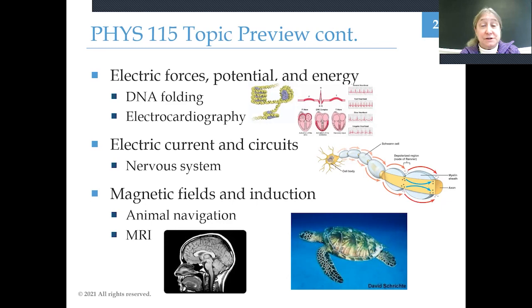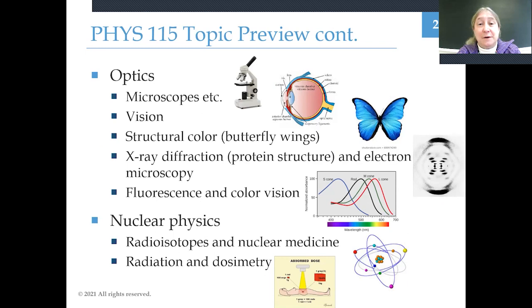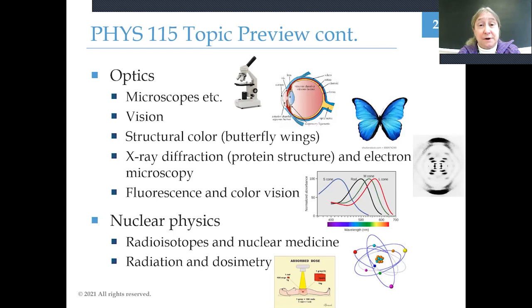Then we'll turn our attention to magnetic fields, starting with magnetostatics and understanding how sea turtles find their way home using Earth's magnetic field. We'll also learn about magnetic induction and magnetic resonance imaging, or MRI. Then we come to my favorite part of the course — optics. Since I use optics in my research, I really enjoy teaching about it. We'll learn about microscopes and how they work, including the microscopes you've been using in your biology labs, and also about the human visual system and corrective lenses. We'll learn about the interference of waves and how that produces structural color — those beautiful blue colors of certain butterflies are not from a blue pigment, but from wave interference. We'll also learn how Rosalind Franklin decoded the structure of DNA using x-ray diffraction.